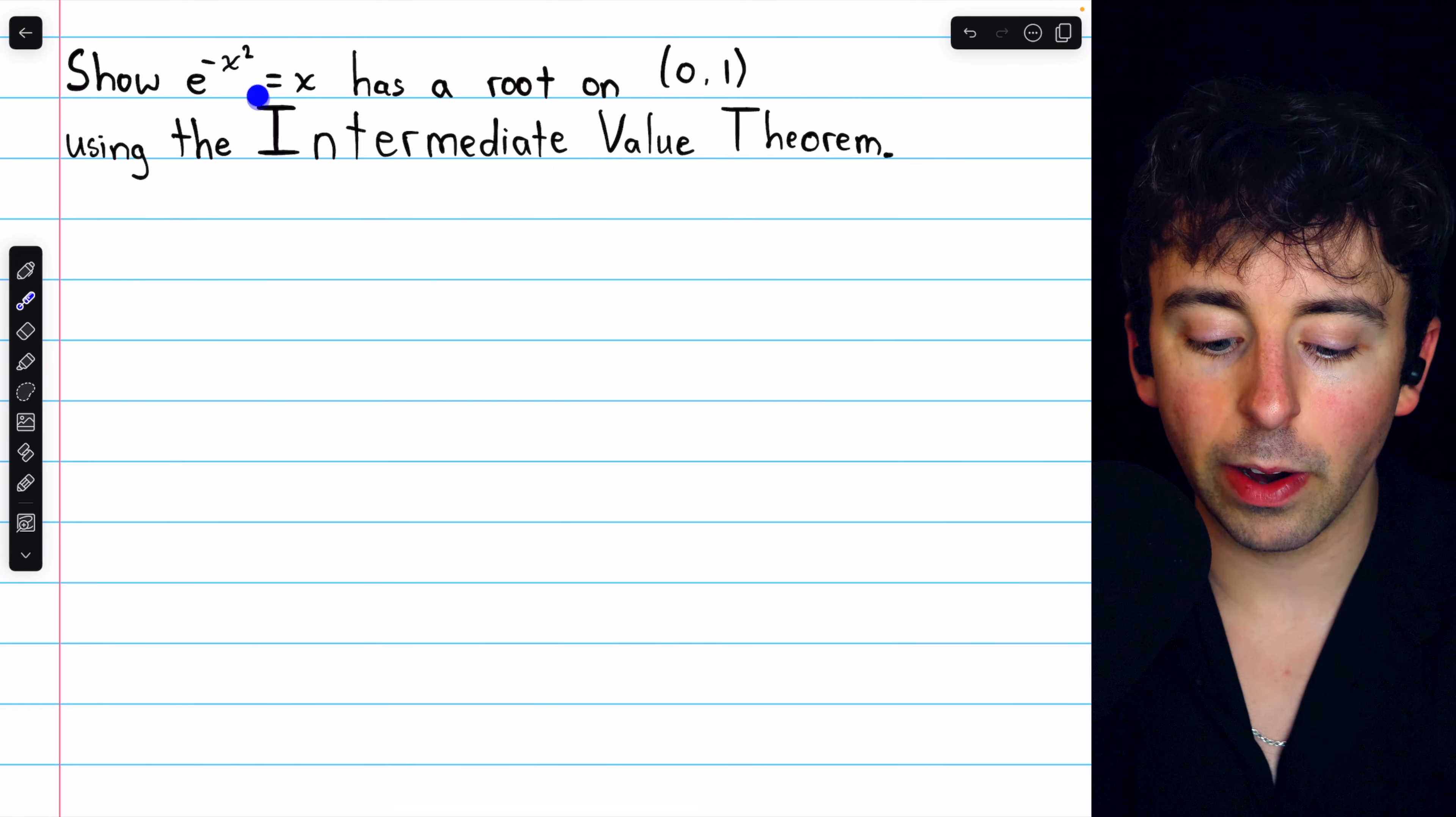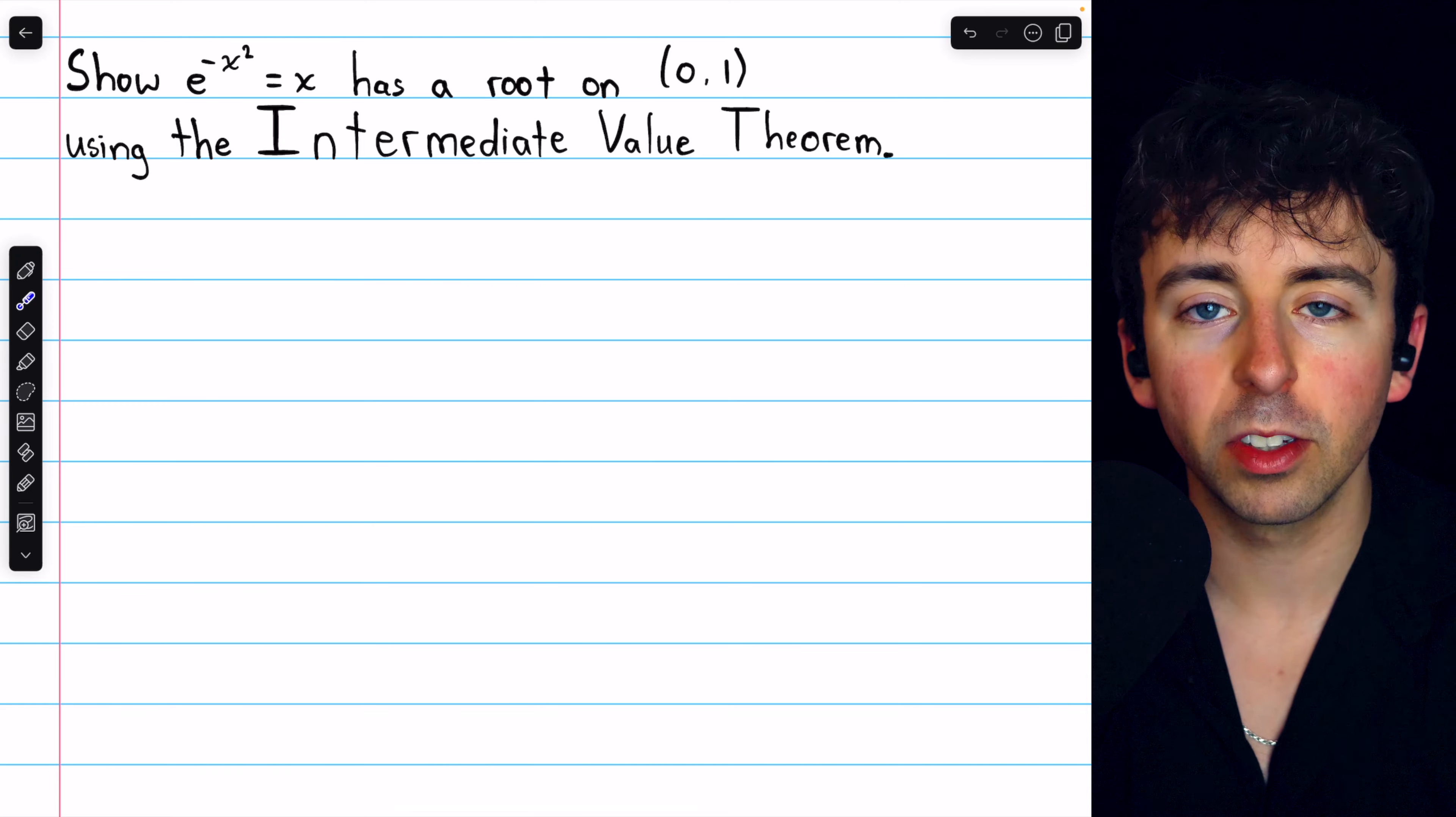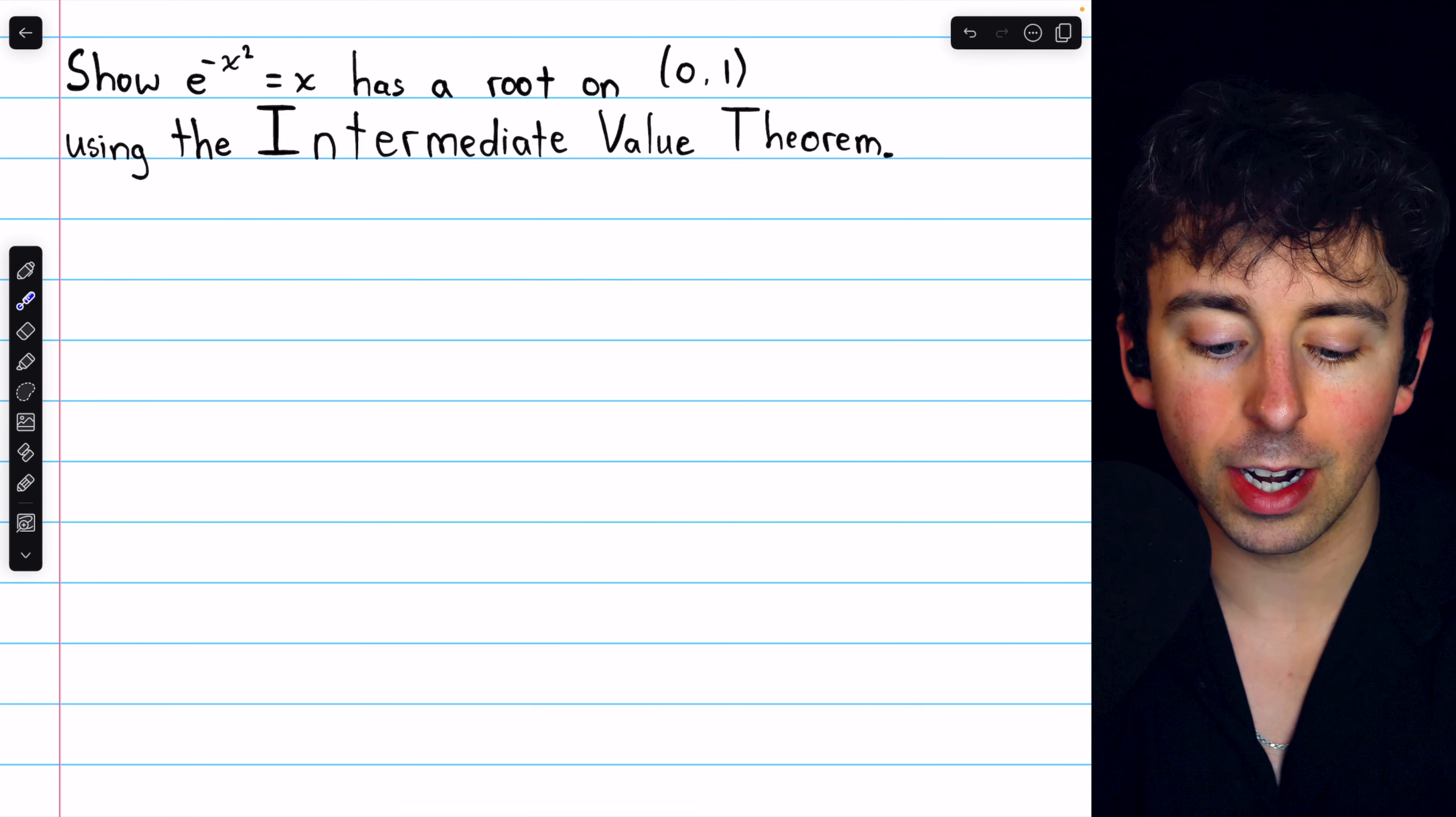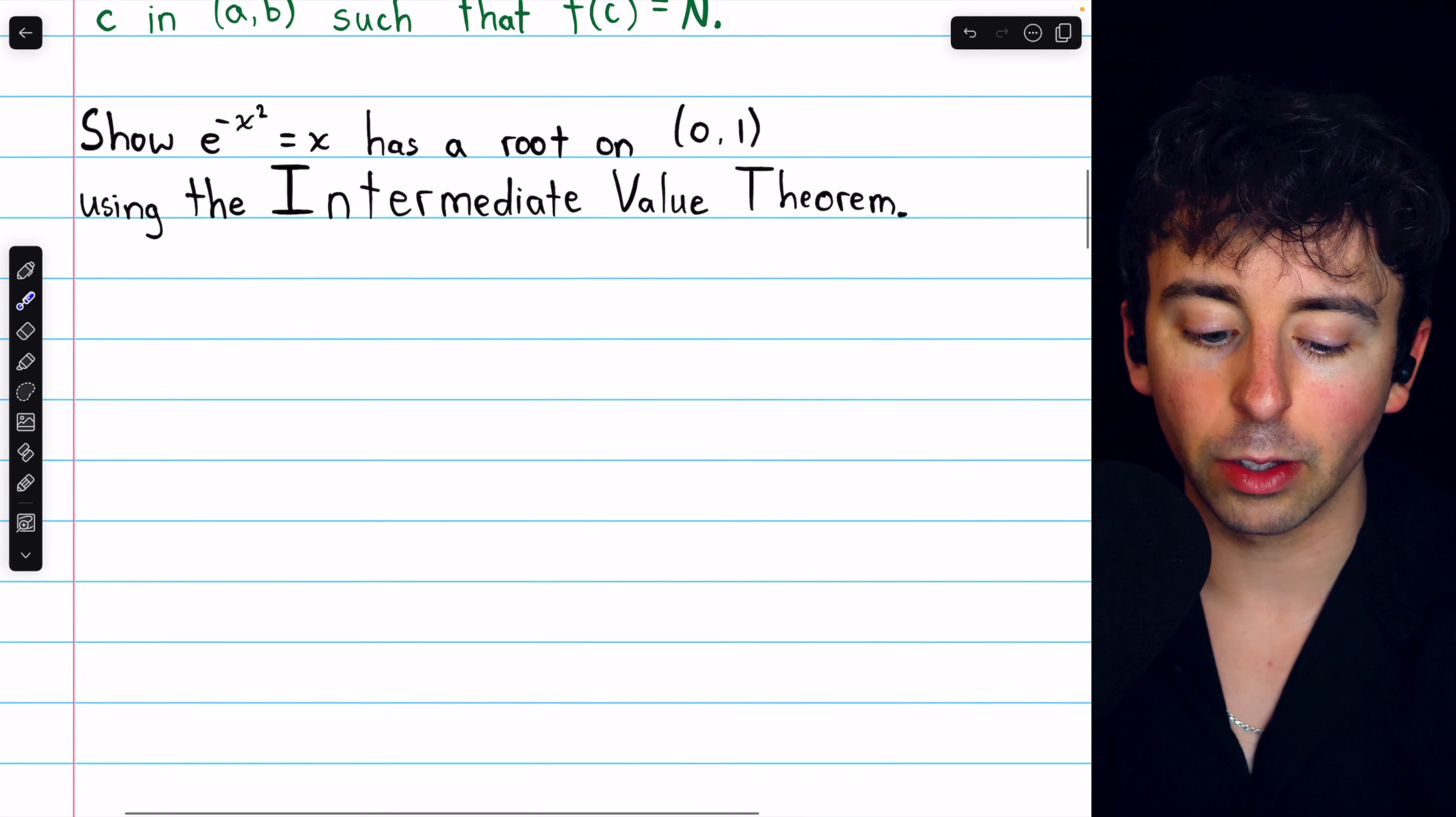Let's show that e to the negative x squared equals x has a root on the interval from 0 to 1. So there's some value between 0 and 1 that makes this equation true, and we'll do this using the Intermediate Value Theorem.